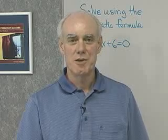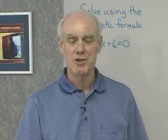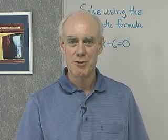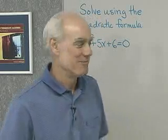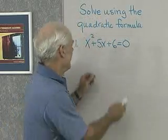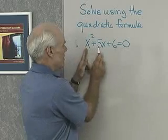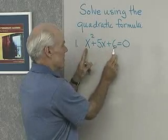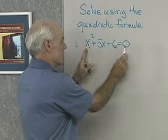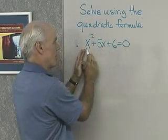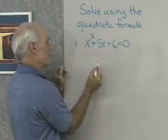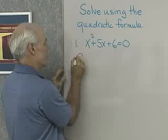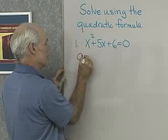In this section, we want to solve some quadratic equations using the quadratic formula. Let's look at our first problem. We have x squared plus 5x plus 6 is equal to 0. I want to use the quadratic formula to solve this, so I first identify a, b, and c.